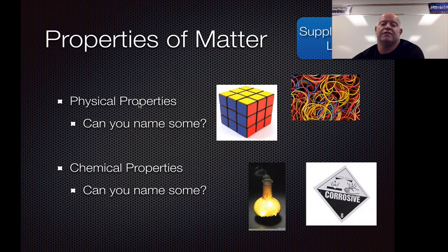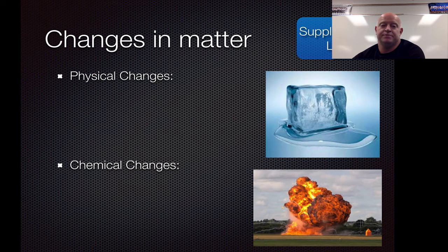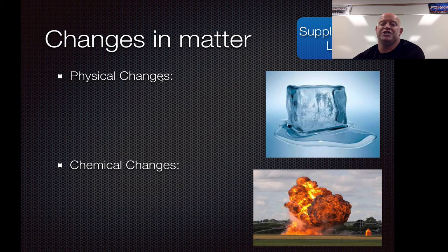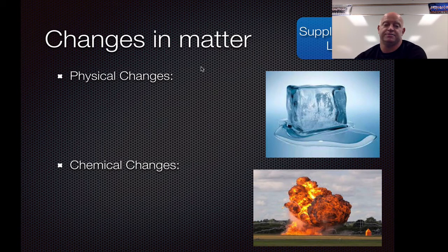We have properties which identify what something is, and then when you want to make a change to that property, we call those physical changes versus chemical changes. So the physical properties of water in its solid state: it's hard, it's cold, it's rigid, it's clear. But if we do a physical change for ice, we can melt it — it turns to a liquid — and then we can boil it and it actually turns to a gas. So those are our physical changes.